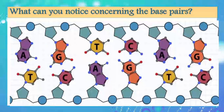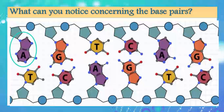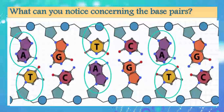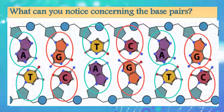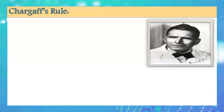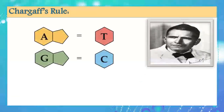Looking at this DNA strand, what can you notice about the base pairs? When we have adenine in one strand, we have thymine in the opposite strand — so adenine always pairs with thymine. Where you have guanine, you have cytosine in the opposite strand — so guanine always pairs with cytosine. This rule was discovered by Chargaff and is called Chargaff's rule: A equals T, and G equals C.